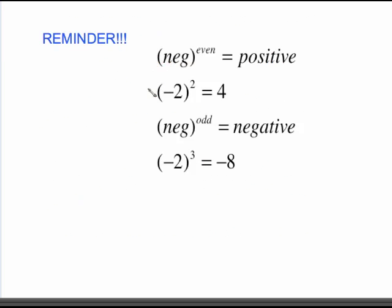Here's an important reminder: if you raise a negative to an even power it becomes positive. Negative 2 in parentheses squared is a positive 4. This is not the same as negative 2 squared with no parentheses — that means square the 2 which is 4, and then apply a negative, giving you negative 4. If you raise a negative to an odd power, it stays negative. Negative 2 cubed equals negative 8.